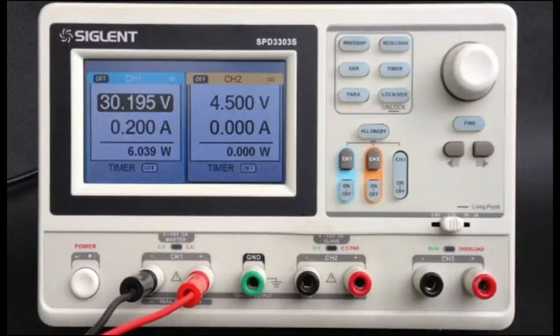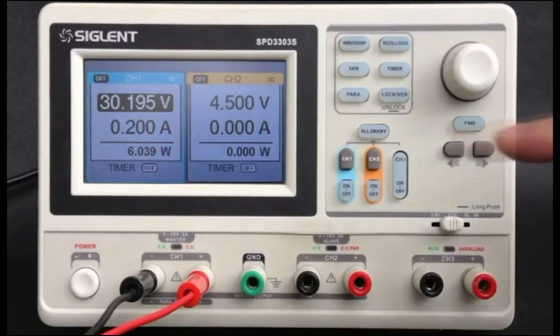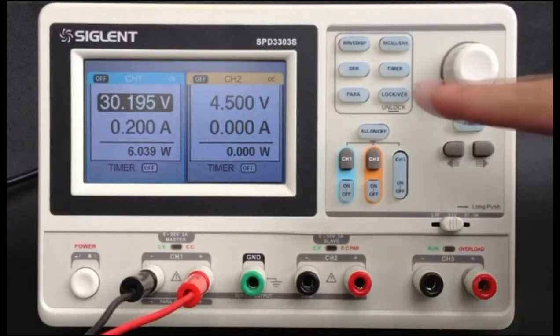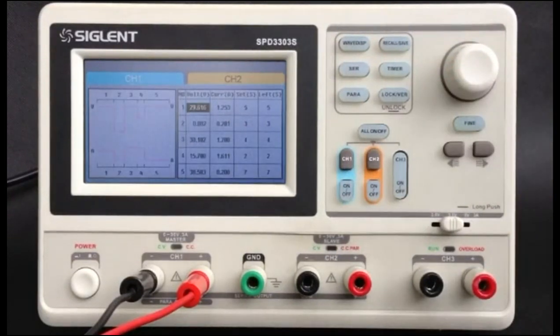Press timer to enter the timer setup interface. Press channel 1 or channel 2 to select the wanted channels, then press timer to enter the timer setup interface.